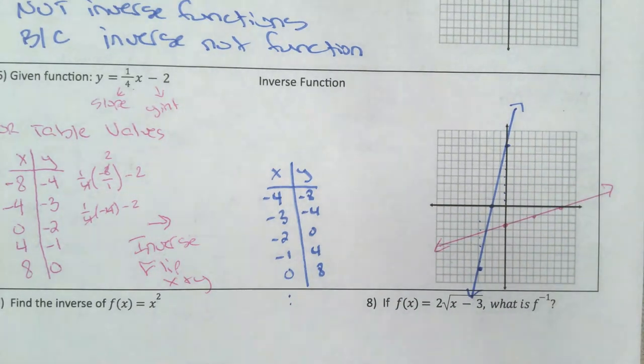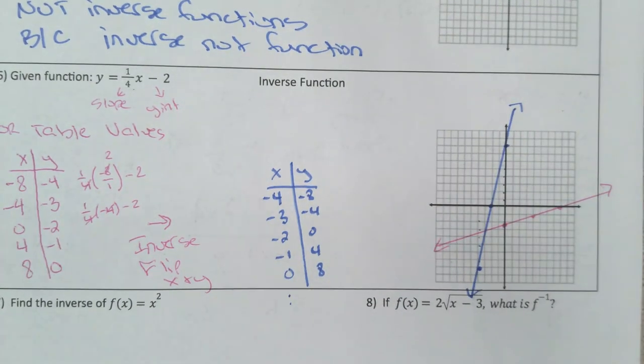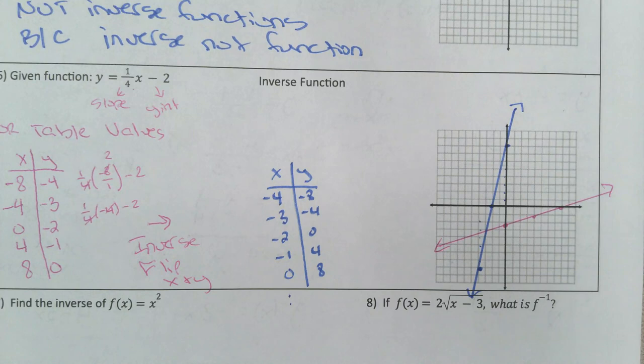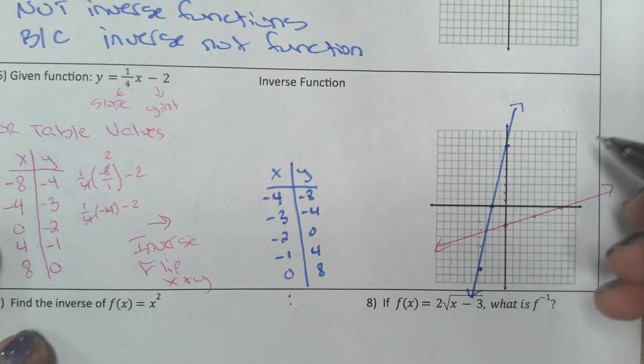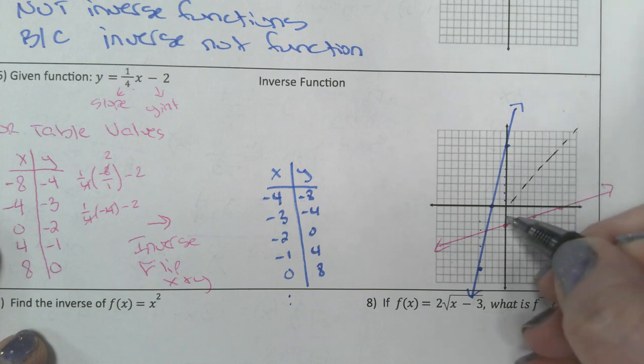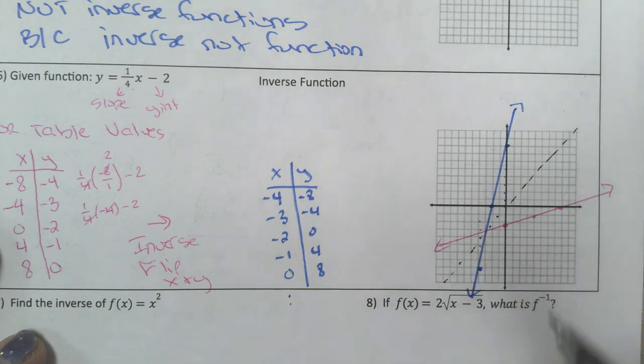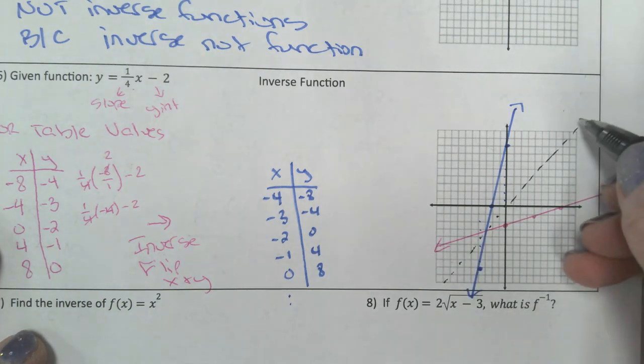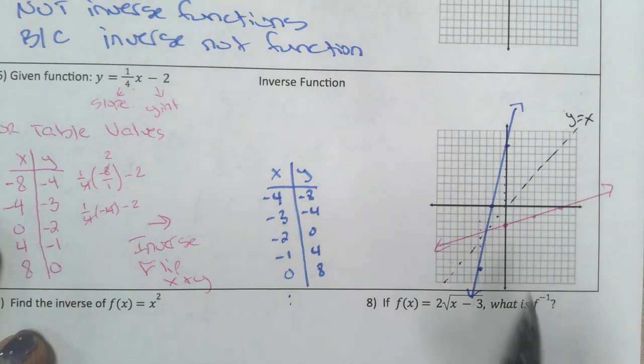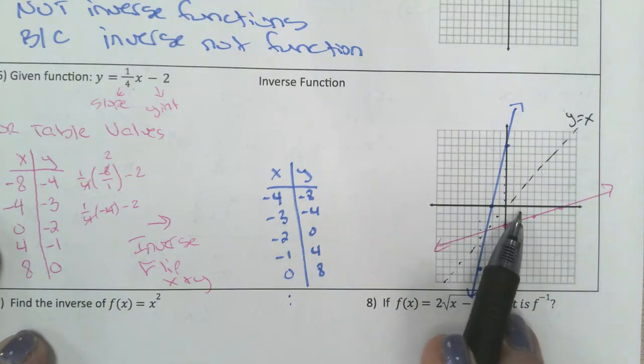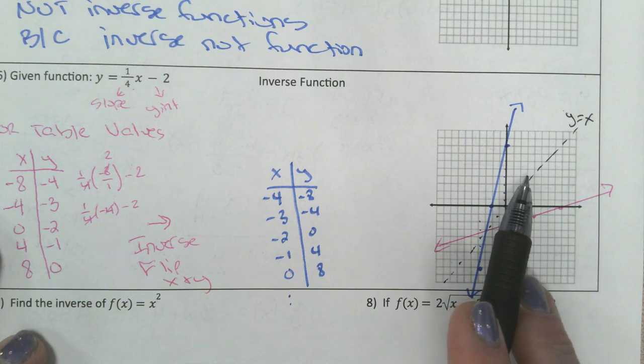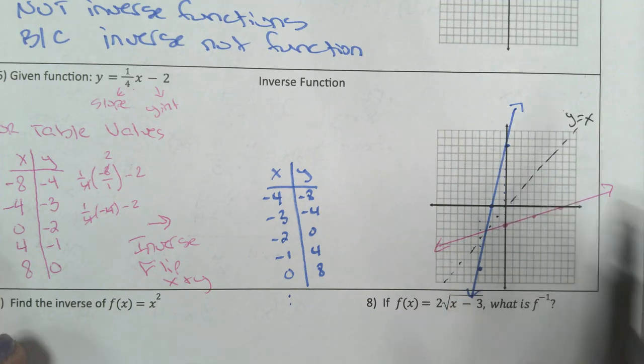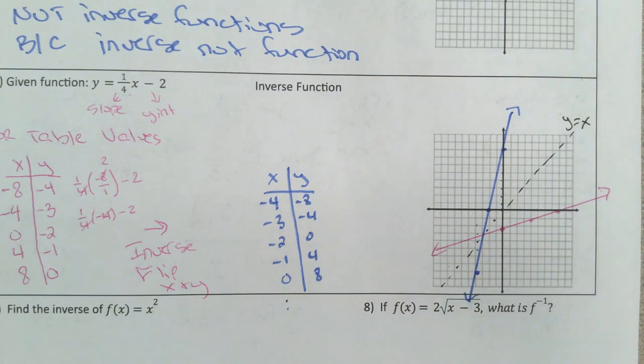The inverse of a line is another line. They kind of have this interesting symmetry to them that they do. The inverse is always the line y equals x. They are inverses, rotated about that line. That's what's really happening here.